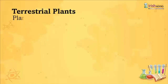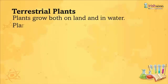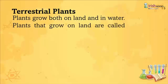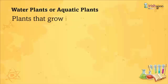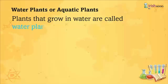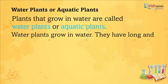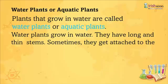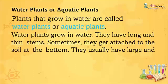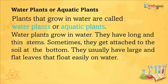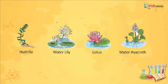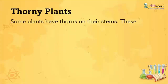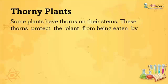Terrestrial and Aquatic Plants: Plants that grow on land are called terrestrial plants. Plants that grow in water are called water plants or aquatic plants. Water plants grow in water and have long and thin stems. Sometimes they get attached to the soil at the bottom. They usually have large and flat leaves that float easily on water. Examples include hydrilla, water lily and lotus.